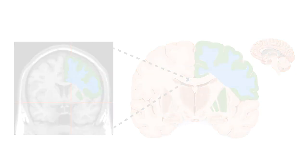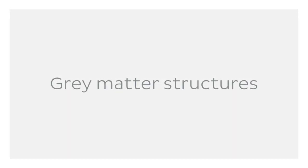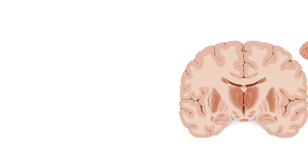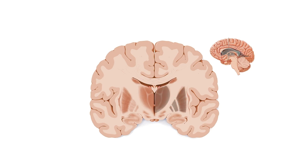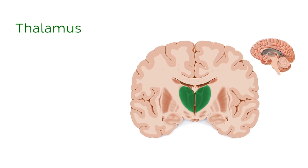Let's first take a look at some grey matter structures. Grey matter is made up of cell bodies — this is where neurons make synapses and the brain integrates their signals. So let's begin at the centre of our illustration, at the thalamus, which is the most major landmark visible in this particular section.